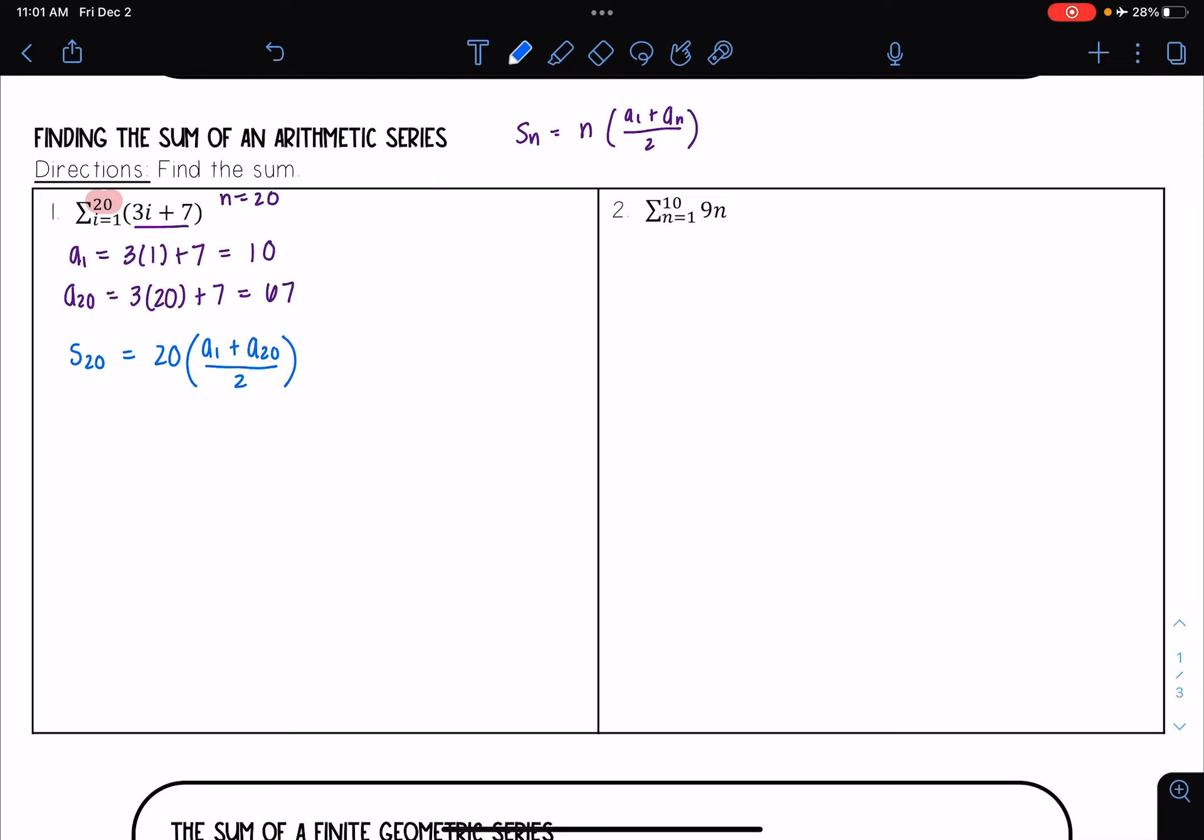So all I did here was replace all the n's in my formula with 20. And now I'm going to replace a1 and a20 with what those terms actually are. We found that a1 is 10 and a20 is 67 over 2.